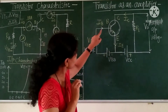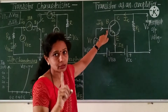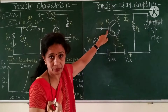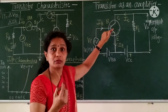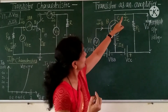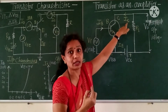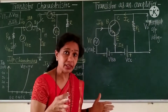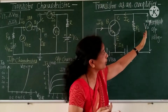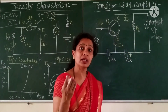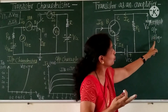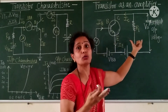This AC signal is applied to the base of the transistor. Then the base current varies, which produces a large change in the collector current. Therefore, the collector current increases. As the current IC increases, the voltage across it also increases.